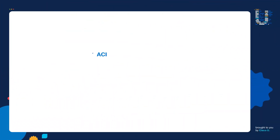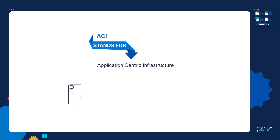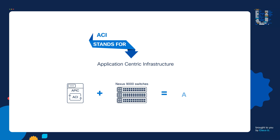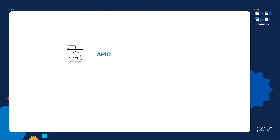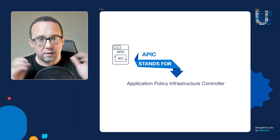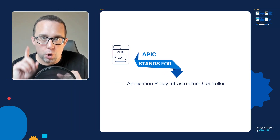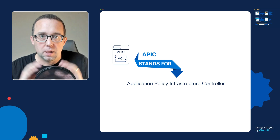In case you're not familiar with ACI, it stands for Application Centric Infrastructure. There are two main components that make up ACI: simply put, an APIC plus Nexus 9000 switches equals ACI. The APIC stands for Application Policy Infrastructure Controller. To configure, manage, and troubleshoot your Nexus 9000 switches, you go to one place: the APIC.